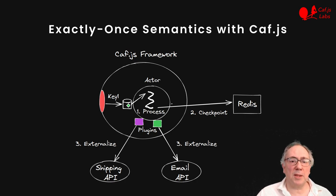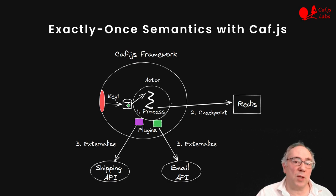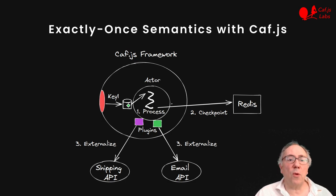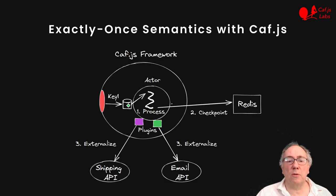But what about exactly once? The idea is that transactional plugins can also ensure that the external calls are idempotent. How to do that depends on the service. In some cases we just need to re-use the transaction ID and ignore some errors. In others, we can query the status of the last request before retrying. And what if we depend on two or more external services? KVJS composes transactional plugins with a two-phase protocol, ensuring that they all commit or abort together.